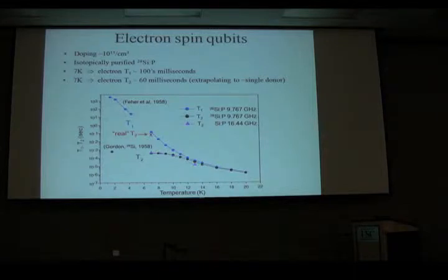So the rest of this I'll be talking about electron spin qubits. So as I said, we're doped about 10 to the 15 per cubic centimeter. It's isotopically purified, phosphorous doped silicon. At say 7 Kelvin, the electron T1 is a couple hundred milliseconds. And the electron T2, if you extrapolate to something like a single donor, is up around 60 milliseconds in this sample.